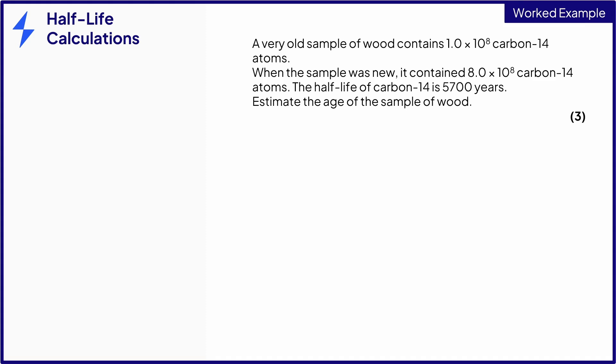It's always a good idea to list or highlight the important information in the question. We start off with 8.0 times 10 to the 8 carbon-14 nuclei. We end up with 1.0 times 10 to the 8. Carbon-14's half-life is 5700 years, and the command word is estimate. This question is worth 3 marks. We want to start off by finding out how many times we need to halve our initial number of nuclei to reach our final number.